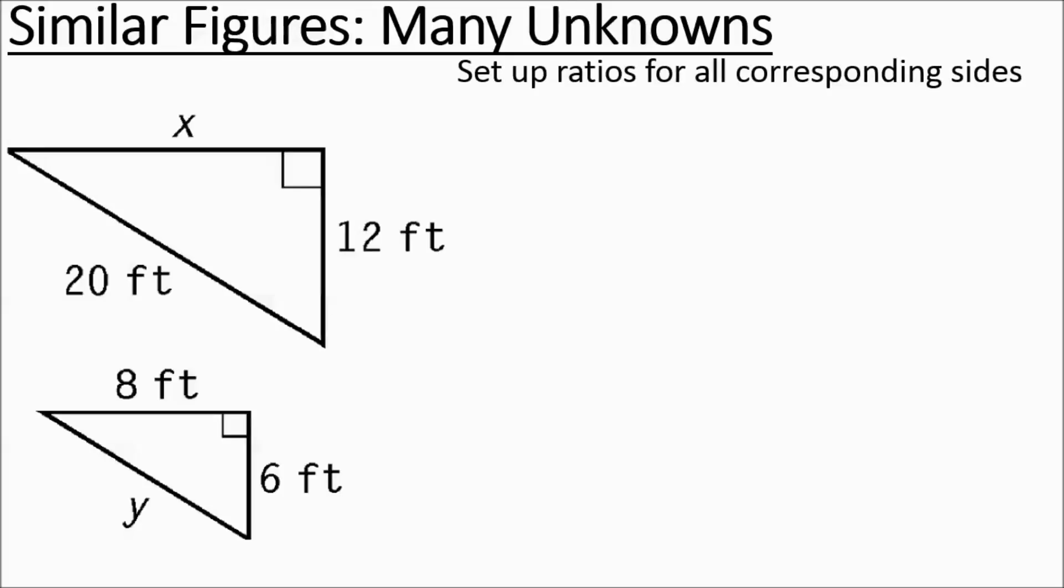We're going to set up ratios for all the corresponding sides. We'll do big to small again. And X and 8 go together. And then 12 and 6 go together. And then 20 and Y go together. So the measurement from the larger triangles in the numerator, the smaller triangle, all of those measurements are in the denominator.